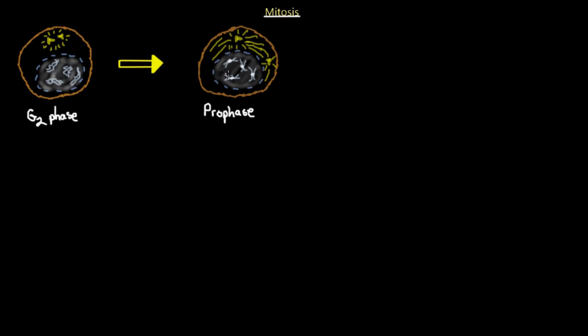The first stage of mitosis is prophase. The first notable change is that the chromosomes condense into threads that become visible under the light microscope — they condense into these X structures as we would normally see. Each chromosome is doubled as a result of replication. The centrosome has divided into two parts, which are generating the spindle as they separate. The two centrosomes are separating and forming a spindle — the beginning of spindle formation starts in prophase.